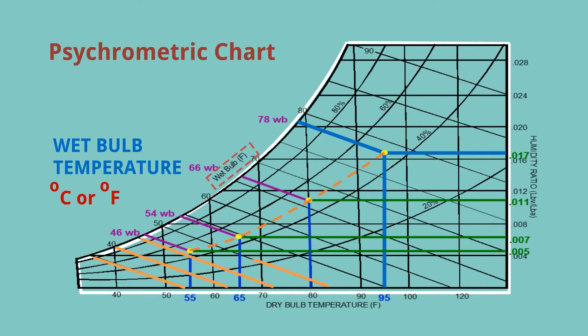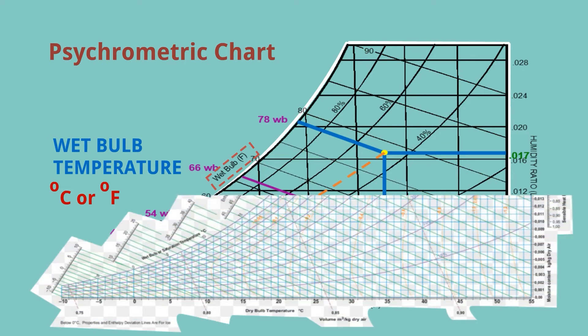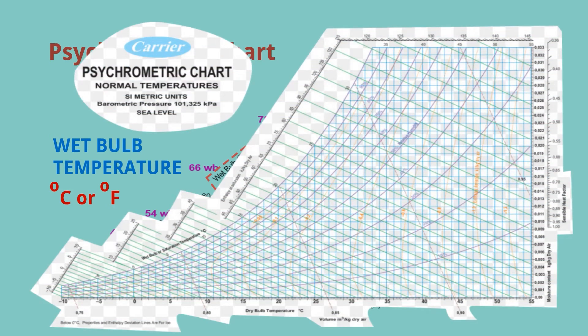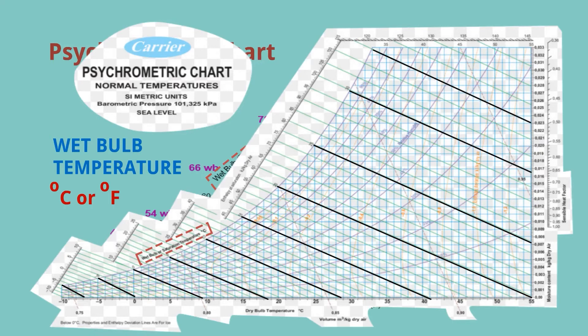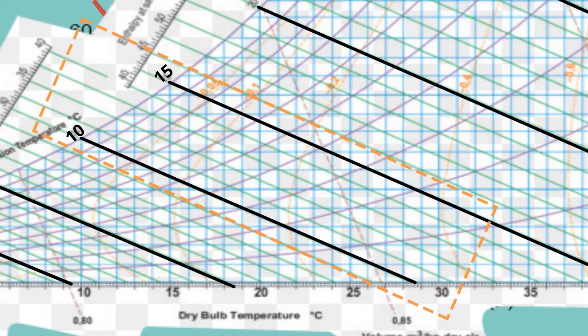This is the wet bulb temperature line in degrees centigrade. In the Fahrenheit scale, here is the Carrier psychrometric chart and this is the wet bulb temperature line. These are the main lines — here 10 degrees centigrade and 15 degrees centigrade wet bulb temperature — and any temperature between lines we can easily find, like 11, 12, 13, 14 degrees centigrade.